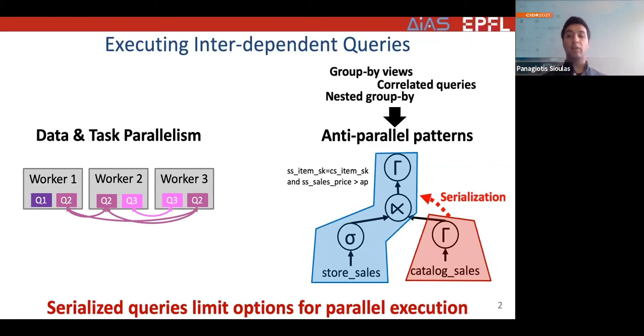Consider the case of a correlated query, the plan of which we see below. The plan is split in two parts, the inner part highlighted in red and the outer part highlighted in blue. It executes as follows: it computes a group-by aggregate over the catalog_sales fact table, and then in the outer part, for each tuple of store_sales, it applies a filter and for satisfying tuples, it compares the sales_price attribute with an aggregate from the inner part. And depending on the comparison, it decides whether to add the tuple in the group-by or not.